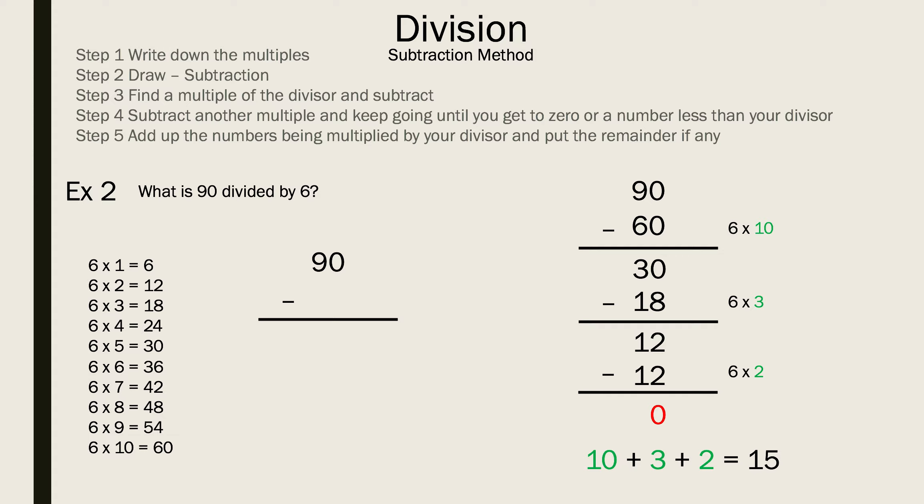You might be asking, can you do it a different way? Yes, you can. We start off the same way: 60. That's 6 times 10. We subtract and we get 30. Now we're going to put the subtraction lines again. Some of you may realize 30 is a multiple of 6. So we can put 30 down because 6 times 5 is 30. We subtract and we get 0. Now we add the green numbers and we get 15 as well.